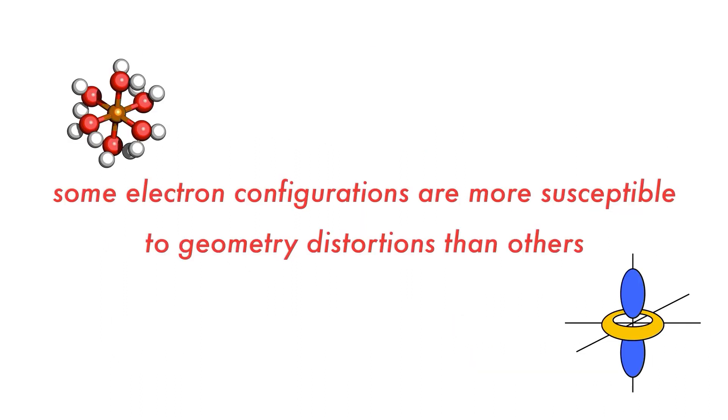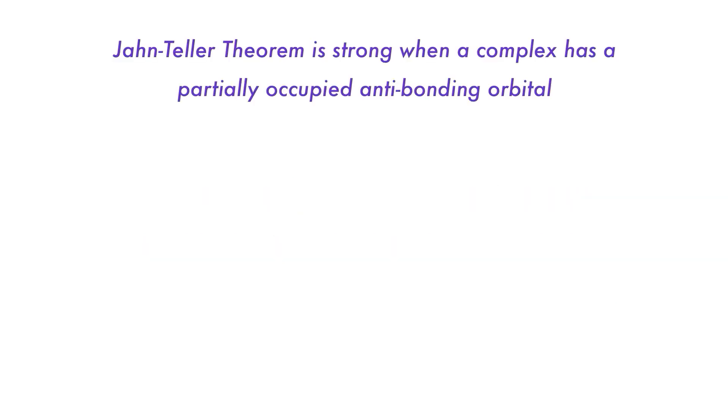There are some electron configurations that are more susceptible to having these kinds of geometry distortions than others. The Jahn-Teller effect is strong when you would predict a partially occupied anti-bonding orbital. For example, high spin d4, the geometry would distort to break the eg degeneracy. Low spin d7 will distort so that the eg orbitals will not be degenerate, and of course the very common d9 such as our copper II complex here.